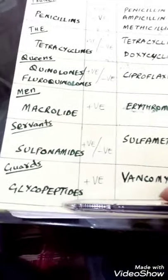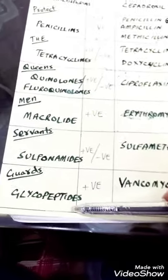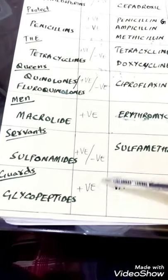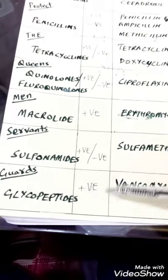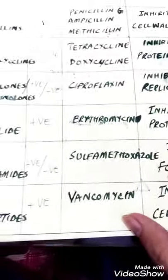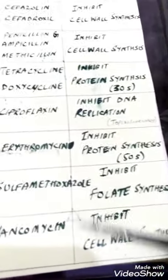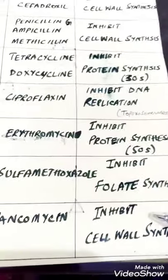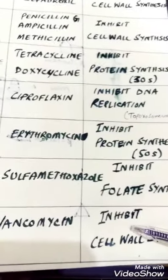The eighth and last class is glycopeptides, which specifically work on gram-positive bacteria. An example is vancomycin. Glycopeptides inhibit cell wall synthesis by destroying the peptide bonds in the cell wall.